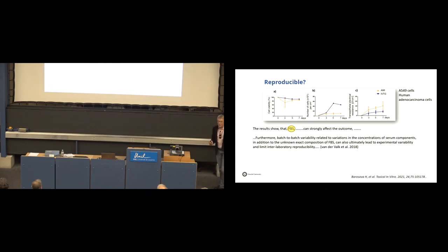And in the results, they refer to our 2010 paper where we discussed the batch-to-batch variability related to variations in the concentration of serum components because it's a biological product, so it can't always have the same composition. In addition to the unknown exact composition of FBS, we still don't know what's the exact composition, can also ultimately lead to experimental variability and limit interlaboratory reproducibility.